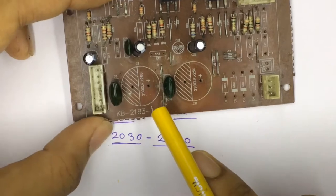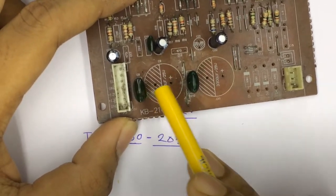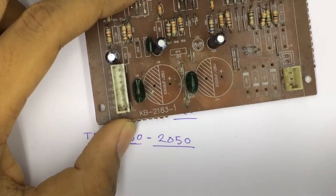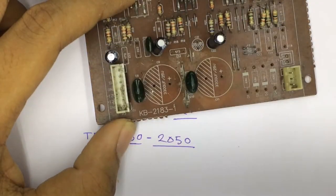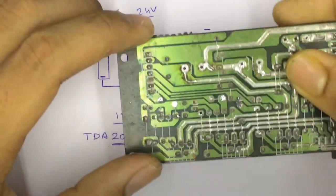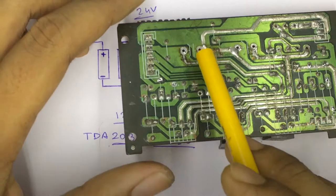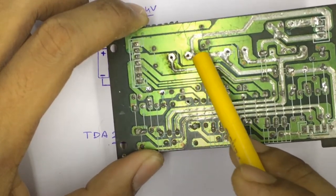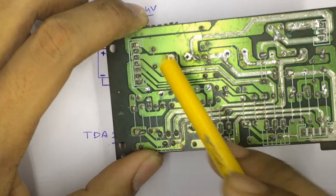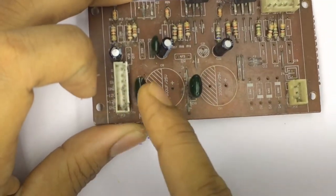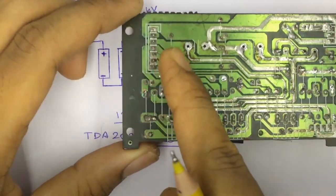On TDA 2030 or 2050 home theater circuits, you can find two capacitors, these kind of big capacitors. Basically these capacitors are main supply filter capacitors, and these are connected in series. As you can see, it's a main negative, negative positive, negative positive, connected in series.